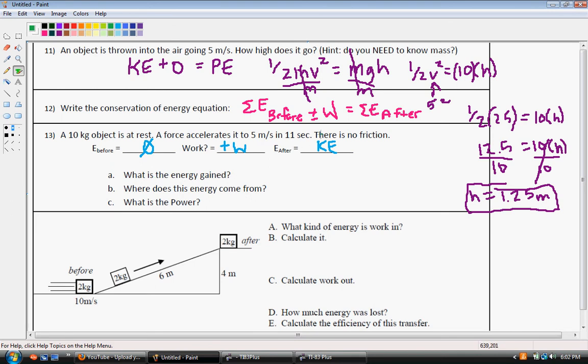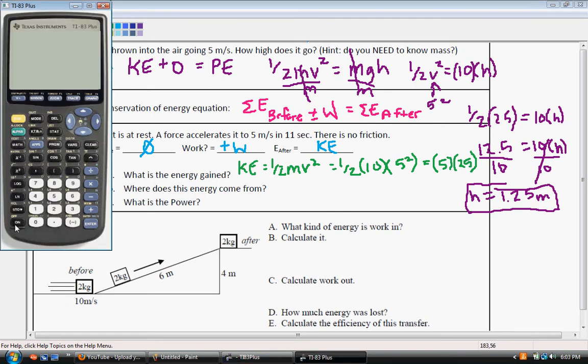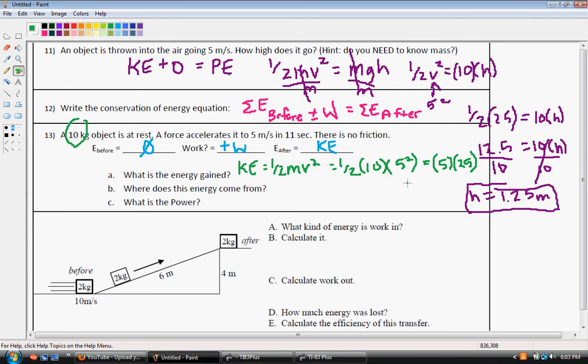Okay, so it wants to know what is the energy gained? Well, we gained kinetic energy. So we know that kinetic energy is 1 half the mass times the velocity squared. So we know it's 1 half, our mass is 10 times our velocity squared, and it goes 5 meters per second, so 5 squared. So that ends up being 1 half of 10 is 5, and 5 squared is 25. So if we multiplied that all out, 1 half times 10 times 5 squared, or our 5 times 25, like we had it, and we get 125.